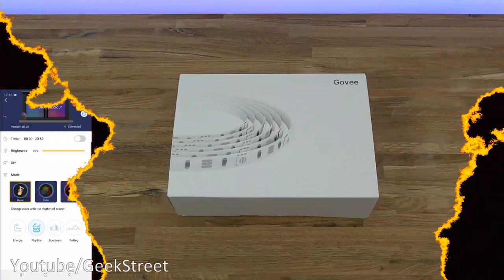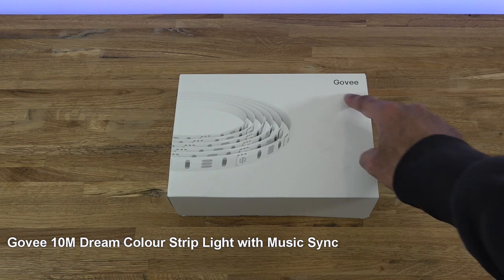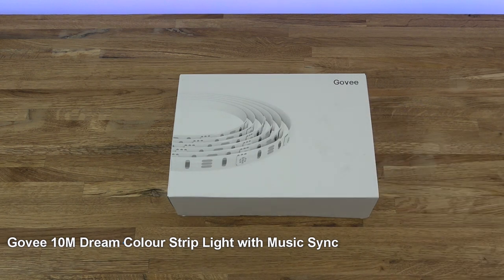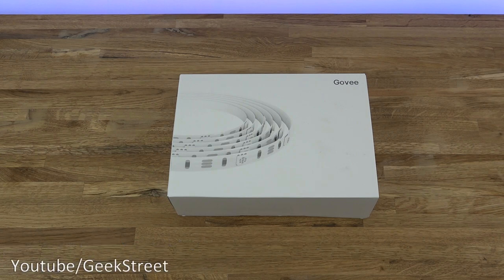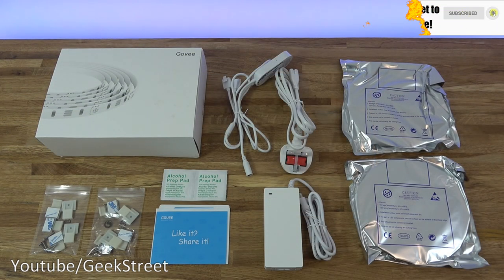Hi there, so they're going to be unboxing an LED strip kit. This particular one is by a company called Govi, details are in the description below for anyone thinking of purchasing. This particular strip kit is 10 meters in length and it's dream color, meaning you could have multiple colors on a single strip. Let's open it up and see what you get in the packaging.